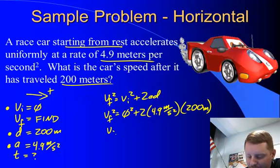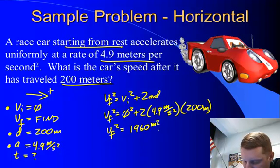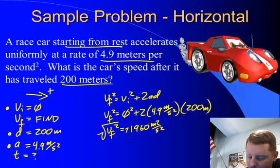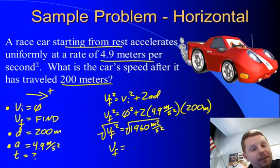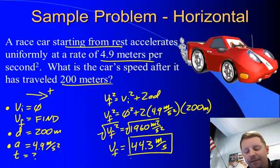Now, pulling out our calculators, VF squared equals 1960 meters squared per second squared. And I don't want VF squared, I want VF. So if I take the square root of both sides, I find that VF equals, and it's actually plus or minus since it's a square root, but we'll use the positive here because that's the one that's going to make sense, VF equals 44.3 meters per second.